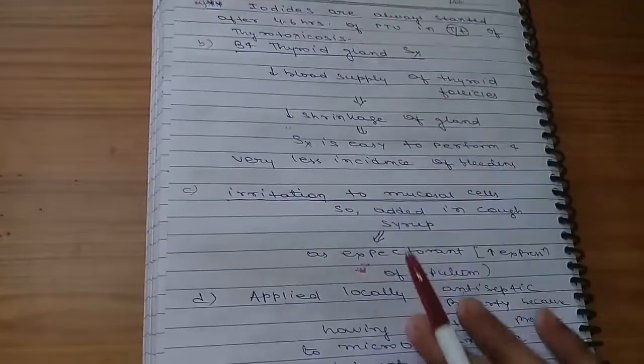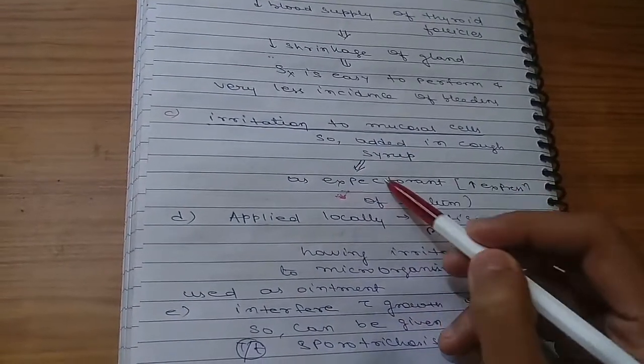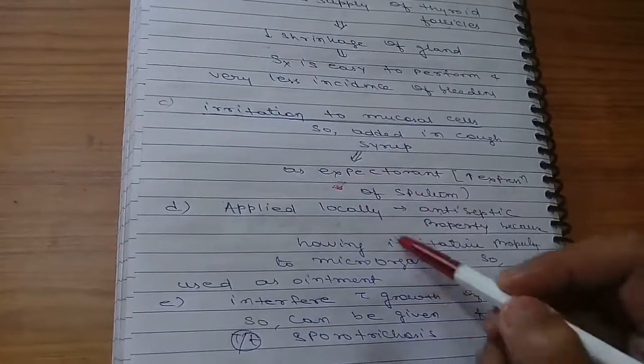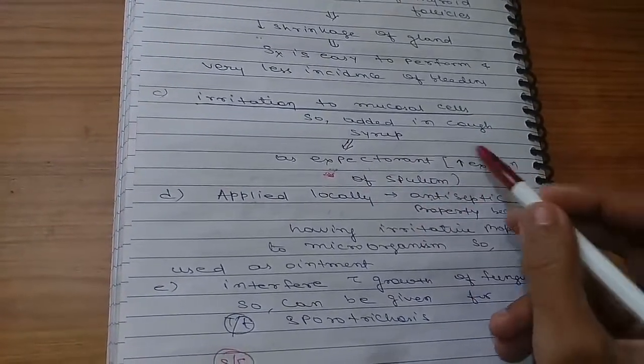It will decrease blood supply of thyroid follicles, decrease shrinkage of gland, so surgery is easy to perform and very less incision of bleeding is seen during surgery. It is also added in cough syrup because it causes irritation to mucosal cells, so it can be used as expectorant.